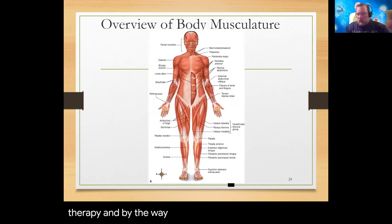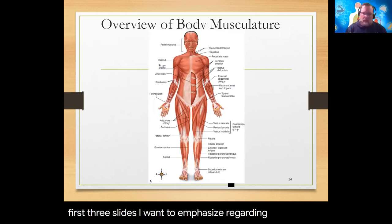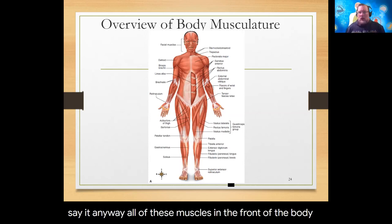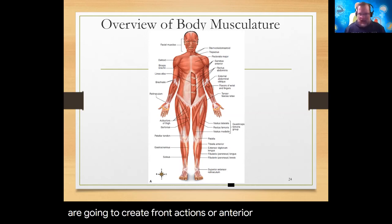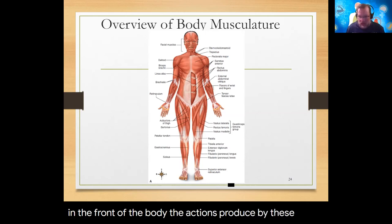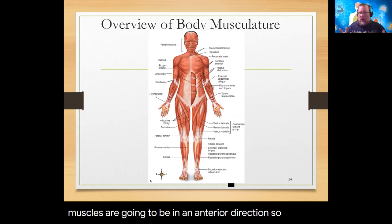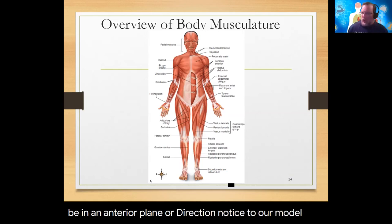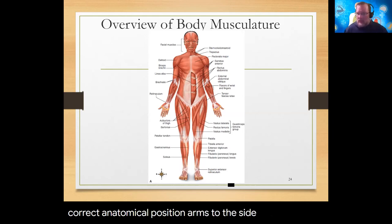Regarding muscle actions: all anterior muscle groups create anterior actions. Anything in the front of the body produces movement in an anterior direction, and contractions of those prime movers occur in an anterior plane. Notice our anatomical model is in correct anatomical position — arms to the side, palms facing forward, thumbs out to the lateral position.